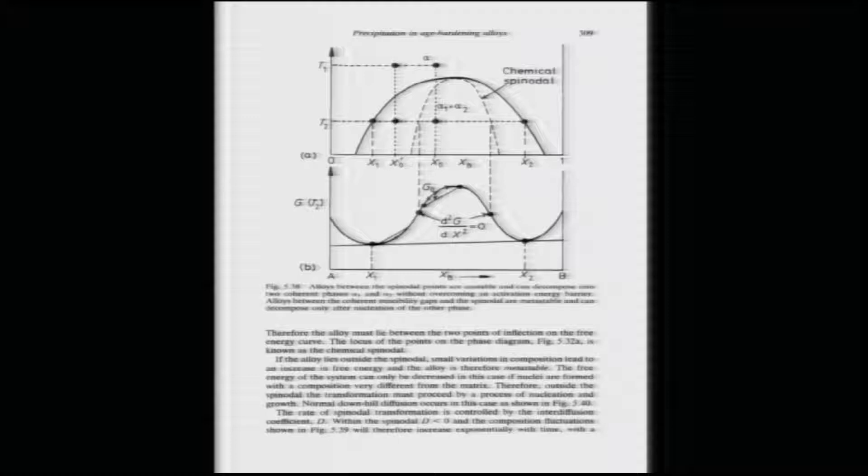These pictures are taken from the book of Porter and Sterling. You see there is a hump in the free energy curve. The inside dotted curve, marked as the chemical spinodal, is defined by the two points where the double derivative of G with respect to composition is zero — that is, the curvature is zero. There is a concave and a convex curve meeting at these points, so curvature is zero.